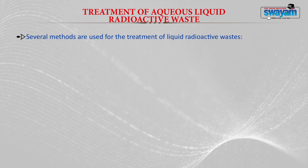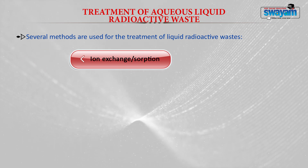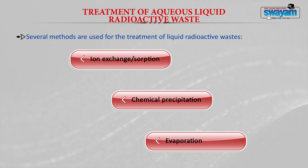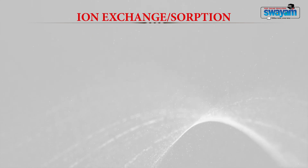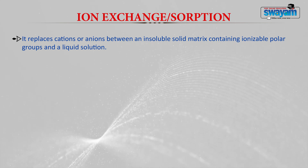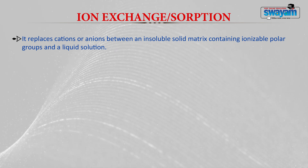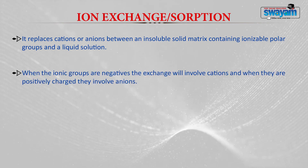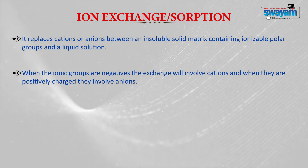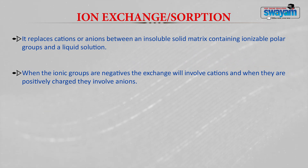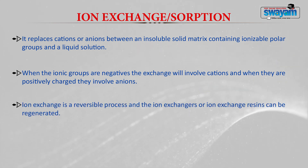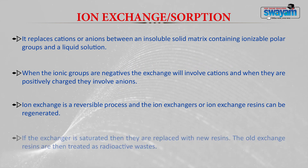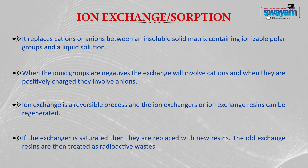For treatment of aqueous liquid radioactive waste, several methods are used, including ion exchange or sorption, chemical precipitation, and evaporation. Ion exchange replaces cations or anions between an insoluble solid matrix containing ionisable polar groups and a liquid solution. When the ionic groups are negative, the exchange involves cations; when positively charged, they involve anions. Ion exchange is a reversible process, and ion exchange resins can be regenerated; if saturated, they are replaced with new resins.